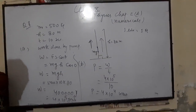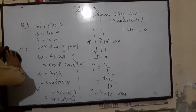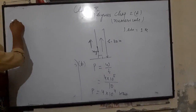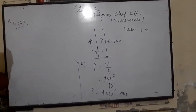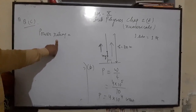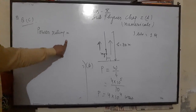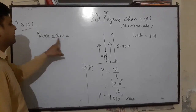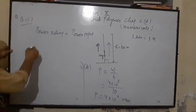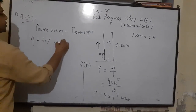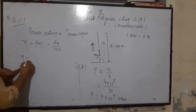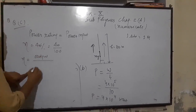In part C, find the power rating of the pump if its efficiency is 40%. Power rating means power input. Efficiency η = 40% = 40/100. The formula for efficiency is: η = power output / power input.